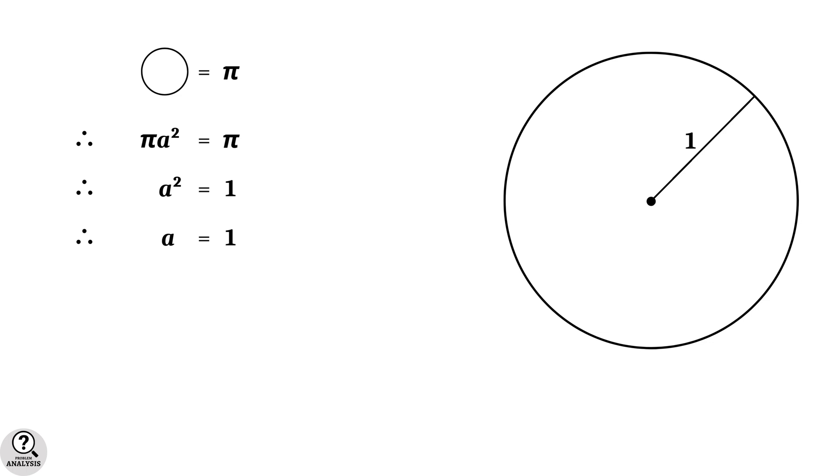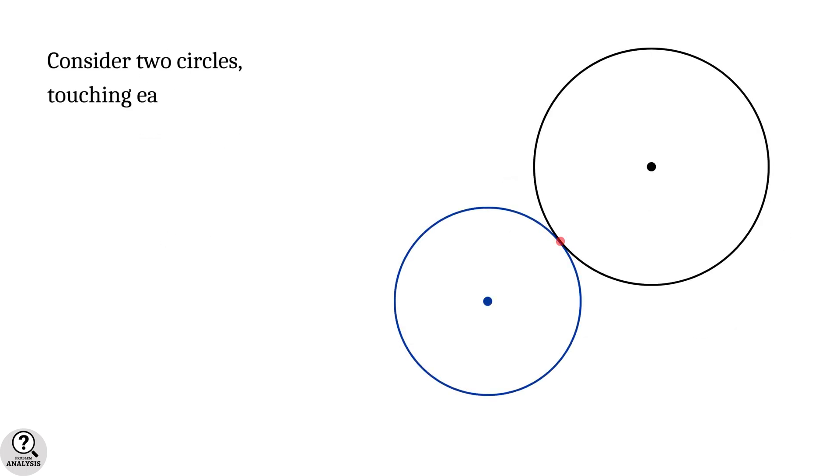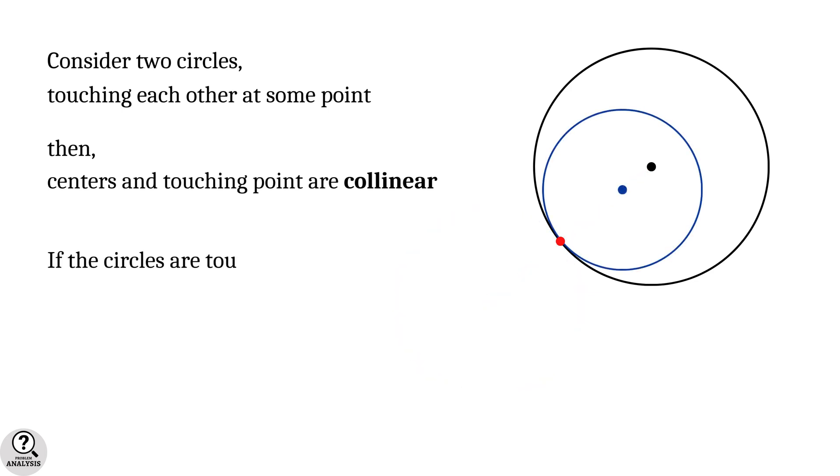Now we have to note an important property of touching circles. Consider two circles touching each other at some point externally. Then the fact is, the centers of the circles and the touching point are collinear. Now if the circles are touching internally, that is one circle is contained inside another circle, then also the result is true. That is, centers of the circles and the touching point are collinear.